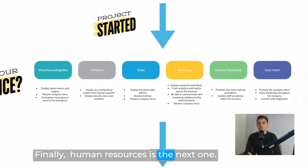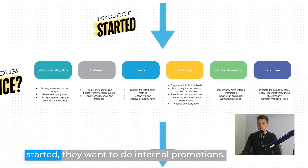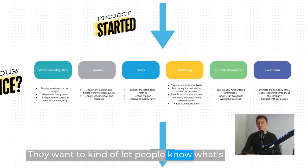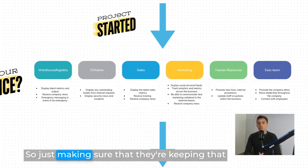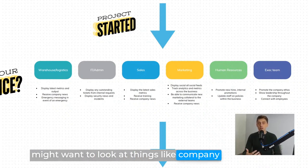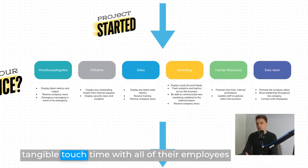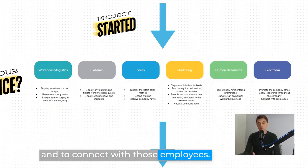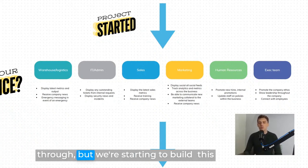Finally, human resources predominantly wants to promote new hires — telling everyone when a new person has started. They want to do internal promotions, let people know what's going on within the company, and update staff on policies. Then from the executive team, they might want to display things like company ethos, show leadership through the digital signage, and make sure they have tangible touch time with all of their employees to connect with them. So we're starting to build this pipe of content we need to deliver.